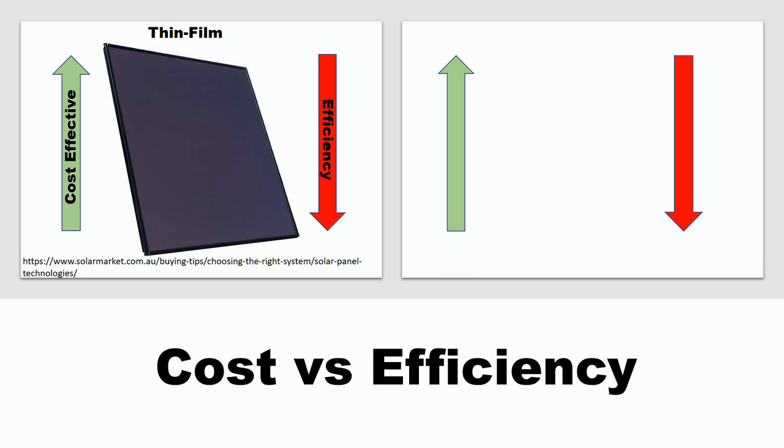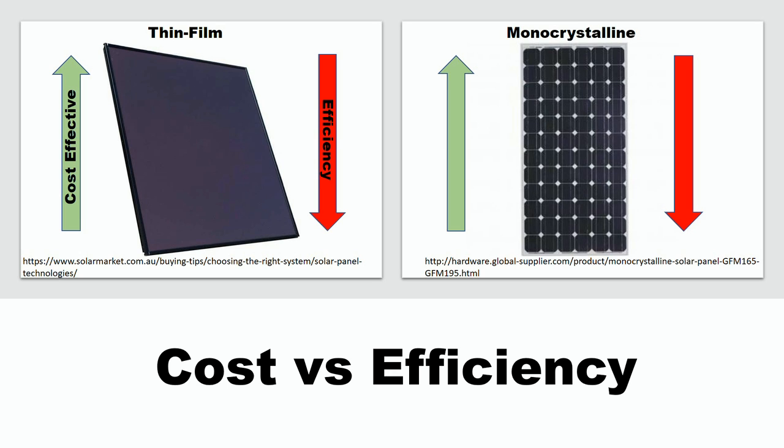The monocrystalline solar cells produce 4 times the amount of energy as the thin film solar panels because they are made of high-grade silicon. So there is a toss-up between cost and efficiency. We can make the thin film solar panels more efficient, but that raises the cost. If only there were a material that is inexpensive and efficient that could replace the expensive ITO conductive layer on thin film cells.